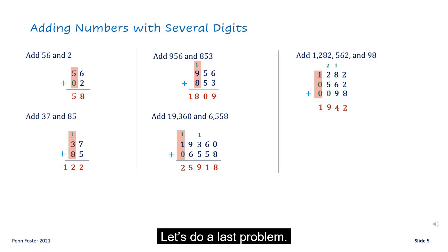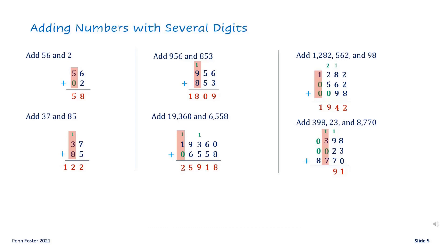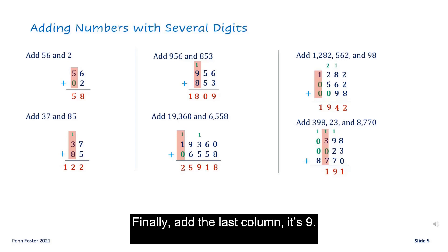Let's do a last problem. Fill in the empty spaces with zeros. Add the first column. It's eleven. Add the second column. It's nineteen. Add the next column. It's eleven. Finally, add the last column. It's nine.